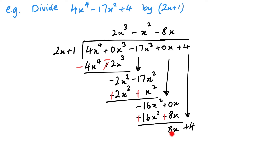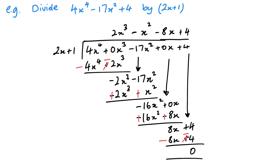Then 8x divided by 2x is 4. Four times 2x is 8x, and 4 times 1 is 4. Finally, change the signs and add, and I get 0 remainder.